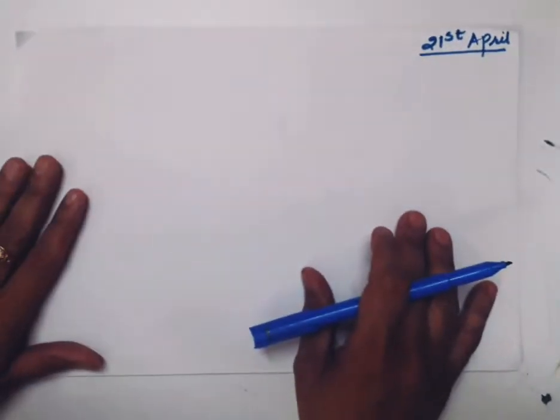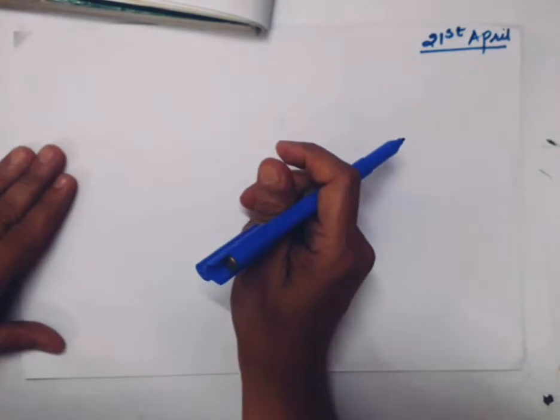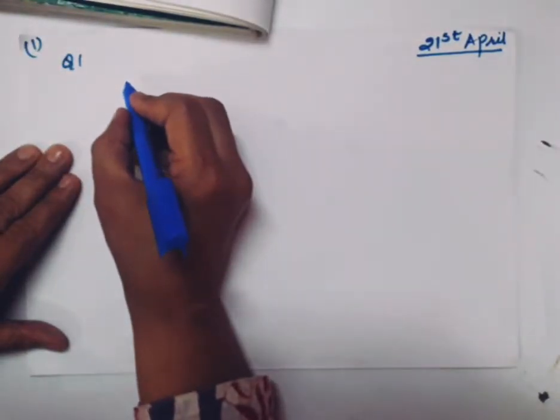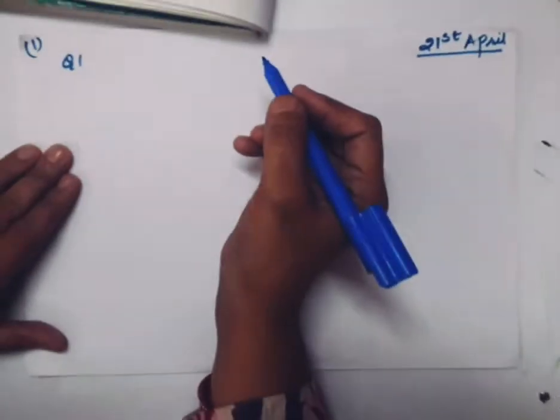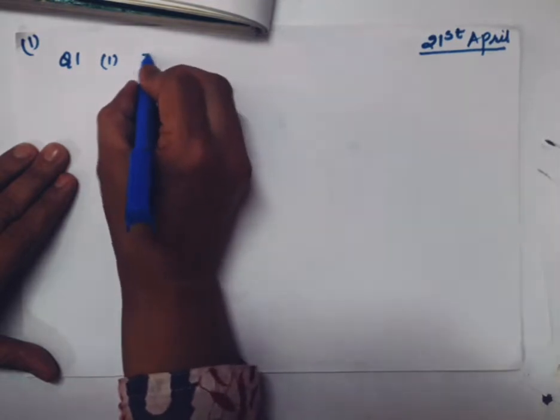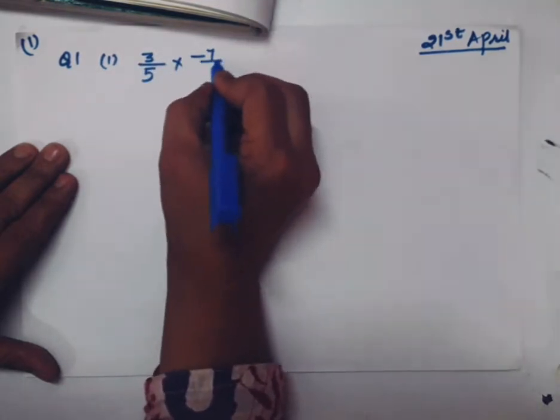The exercise is totally based on multiplication of rational number. I will solve one question of each sum. There are many more sub-parts, but I will solve one or two for you. Question number 1, page number 1. Question number 1 is find each of the following products. Its first part is 3/5 × -7/8.